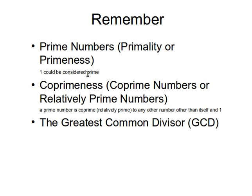The coprimeness of numbers — there's a difference between primeness and coprimeness. Primeness can be a property of one number, whereas coprimeness, the 'co' prefix indicates that it's between two or more numbers. So coprimeness is the relationship between two numbers. Some people call it coprimeness, or they say one number is coprime with or to another number, or they say it's relatively prime to another number. Coprime numbers and relatively prime numbers are the same expression.